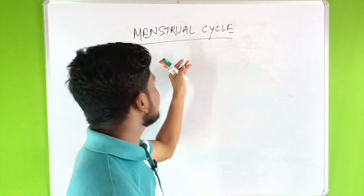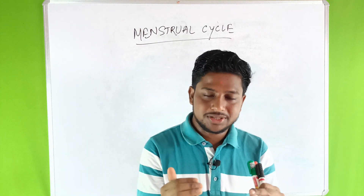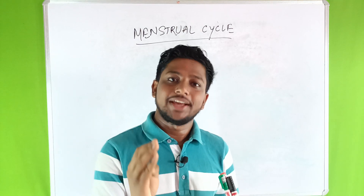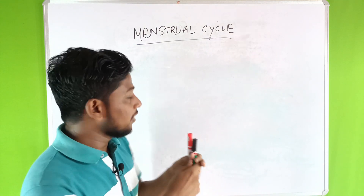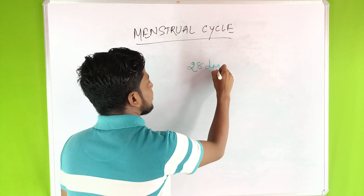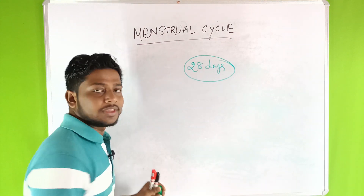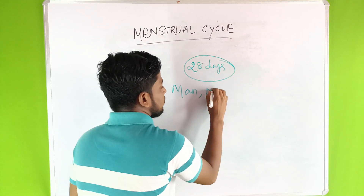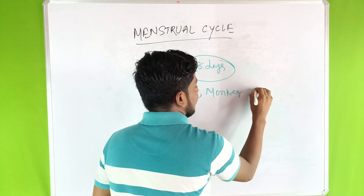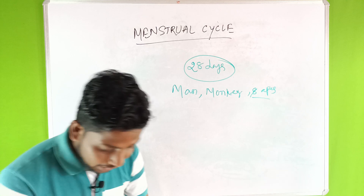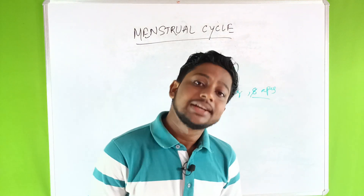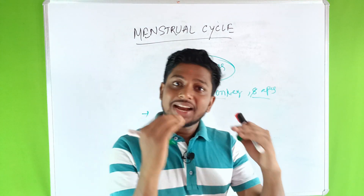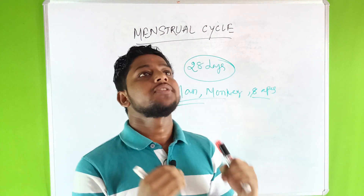The menstrual cycle is a reproductive cycle found in primates like humans, monkeys, and Aves at an interval of 28 days.